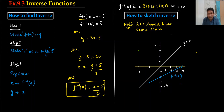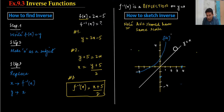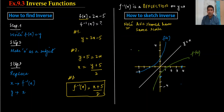F inverse can also be in quadratic form. For example, if you have a curved sketch for f(x), then f⁻¹(x) will definitely be the reflection of that curve over y = x. The reflection will appear on the other side. We need the exact coordinates to plot it accurately, but the concept is: reflect over y = x. This is f inverse.